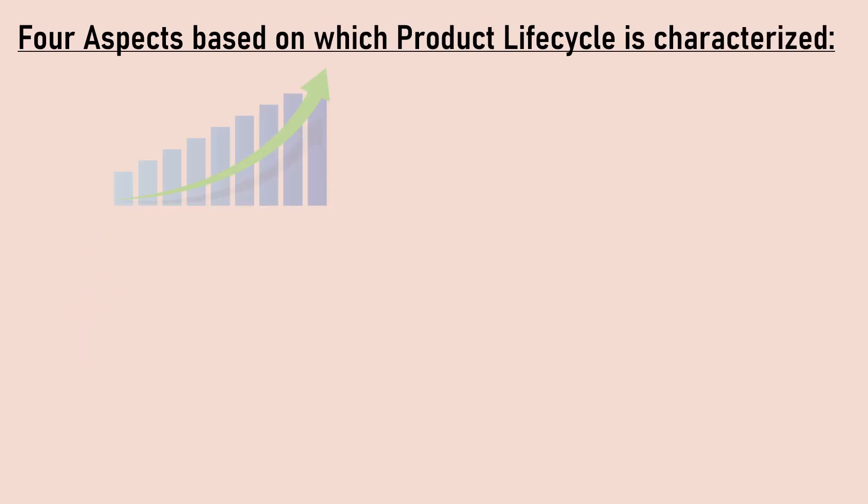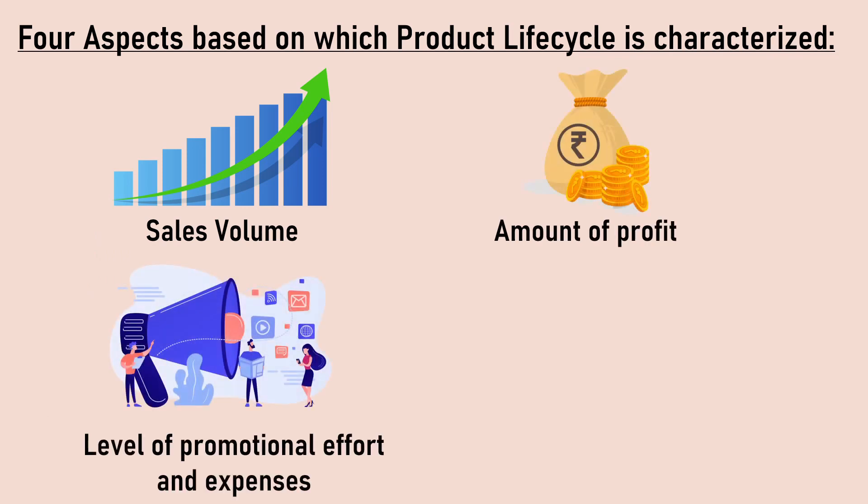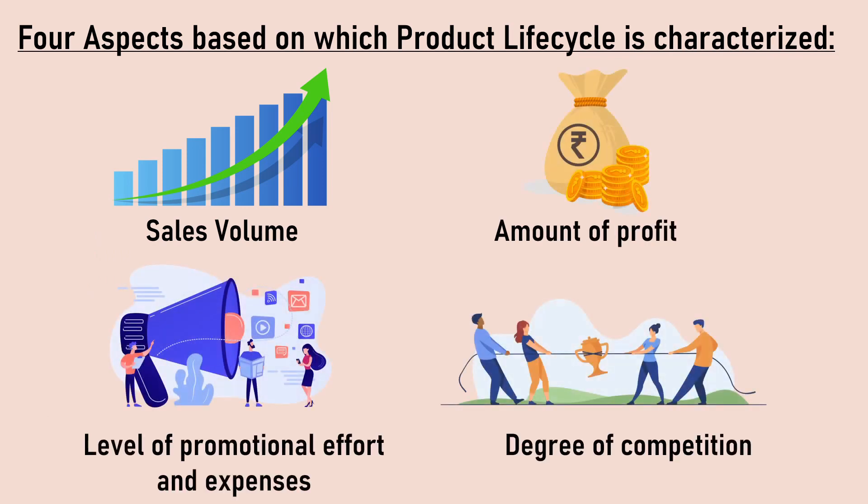Further, there are four aspects on the basis of which product life cycle is characterized. These are sales volume, amount of profit, level of promotional effort and expenses, and degree of competition.